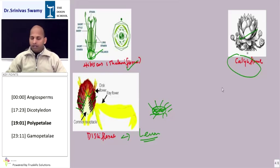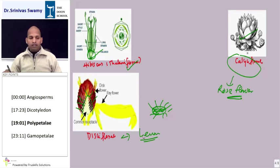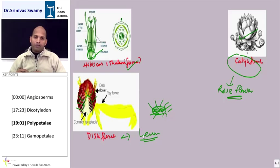An example of that flower is rose flower. This is an example of the Calciflorae type of plant or flower. These are all polypetals, where petals are free.